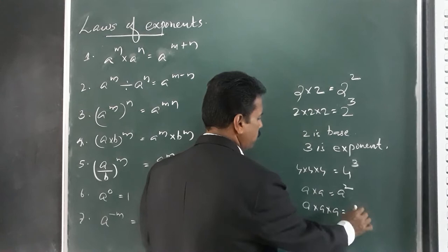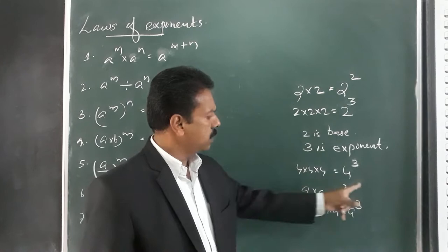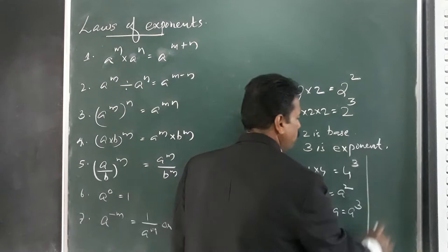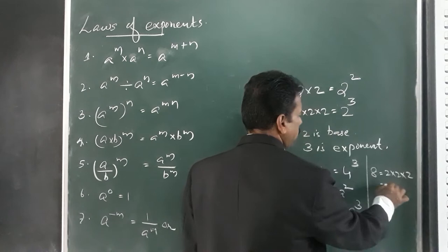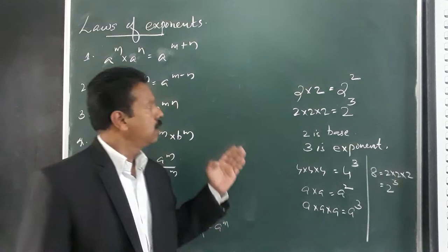There are different rules connected with the laws of exponents. Here three is the exponent and a is the base. We can also write 8 as two into two into two, which is two raised to the power of three. Now we have to go through the different rules.